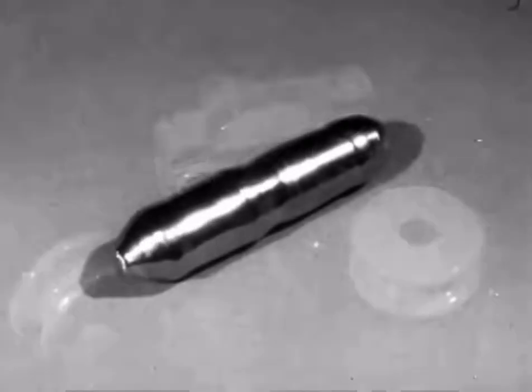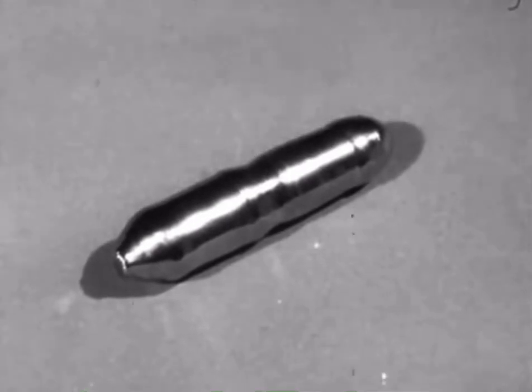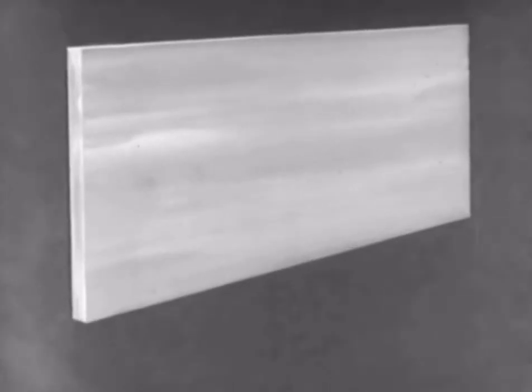Now we come to semiconductors. Under normal conditions, the conductivity of these materials is quite low. To see how this comes about, let us have a look at the atomic structure of germanium.